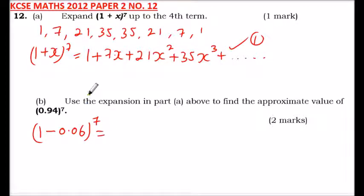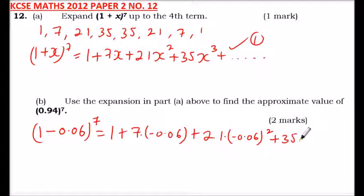Now because this is minus, we will substitute to take the value of x. We have 1 plus 7 times, instead of x here we say it is -0.06, then we have plus 21 times (-0.06)^2, then we have plus 35 times (-0.06)^3.